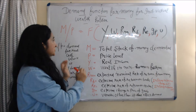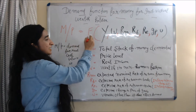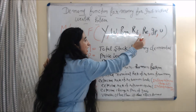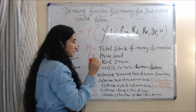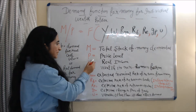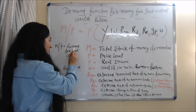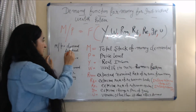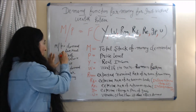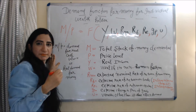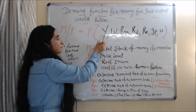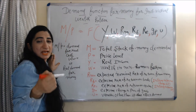Now we talk about the demand function for money for an individual wealth holder, with the help of this equation: M/P is a function of y, w, rm, rb, re, gp, and u. In this equation, M is total stock of money demanded, P is price level, and M/P becomes the demand for real cash balance — that is, the real demand for money.